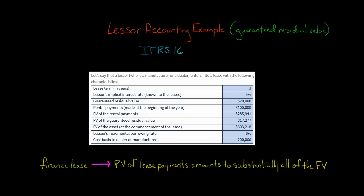Remember when we did the accounting from the lessee's perspective — if the lessee doesn't know the lessor's implicit rate, the lessee would use their incremental borrowing rate. We don't have to worry about the lessee's incremental borrowing rate at all because we are doing this from the perspective of the lessor, and the lessor is going to know their own implicit interest rate. So we're always going to use 5% in this example to do the discounting.